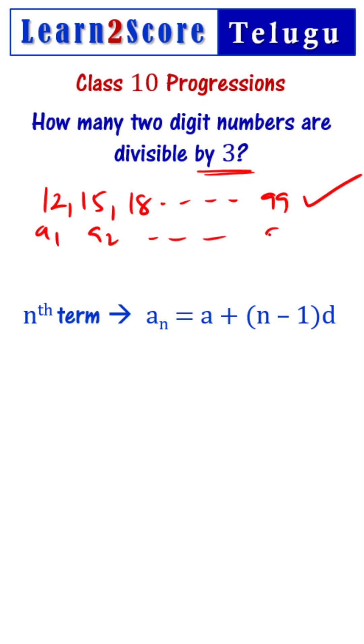A1, A2, and so on up to An. So 99 equals A1, that is equal to A equals 12 plus N minus 1 times D, that is 15 minus 12 equals 3, right?